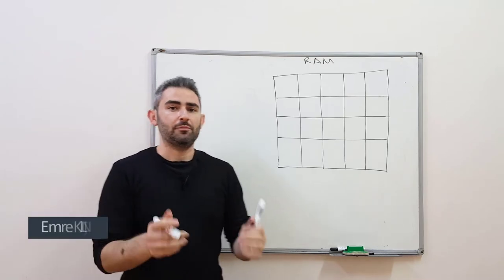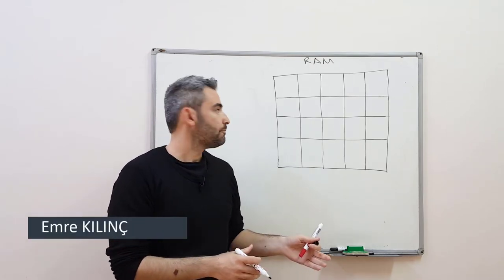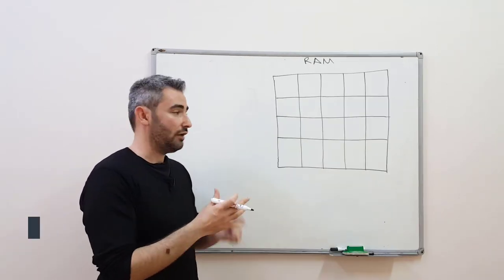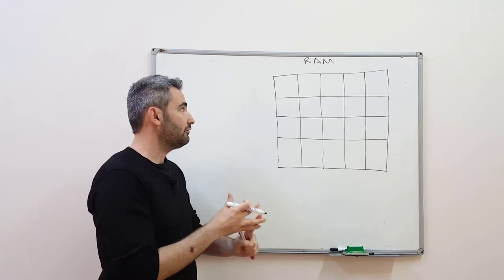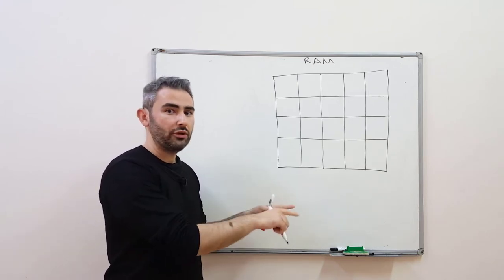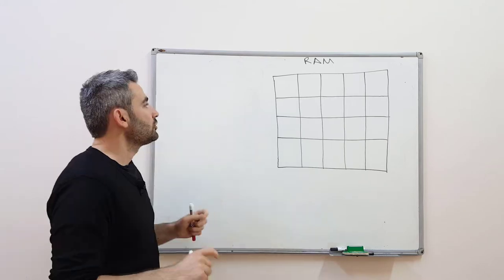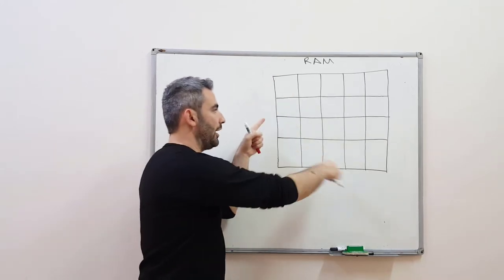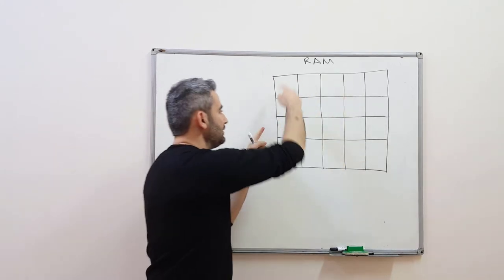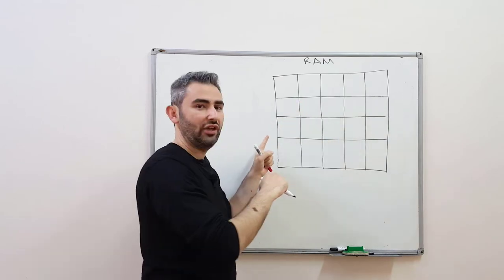Today I will try to explain the logic of pointers. When you compile a code, every function, every variable, everything is first placed into the memory and executed after. So this is our RAM — in other words, memory grid. Think of this memory grid as a hotel.